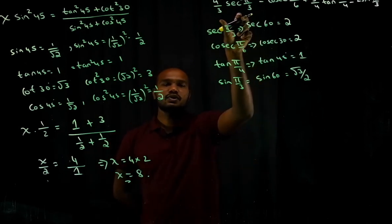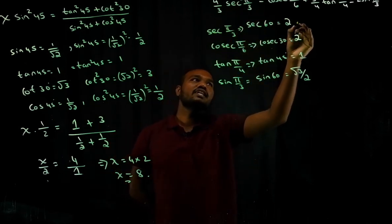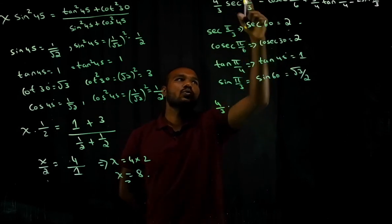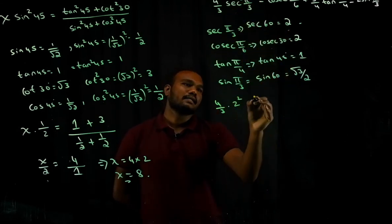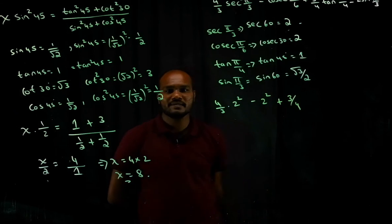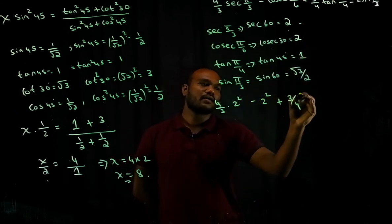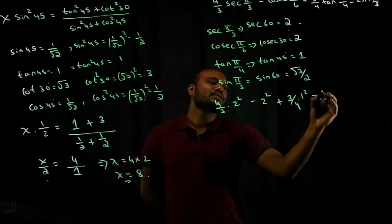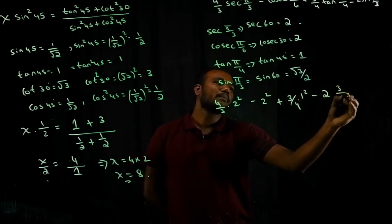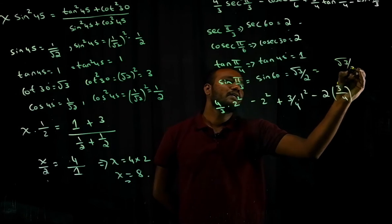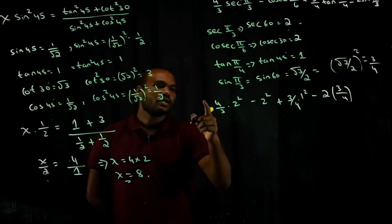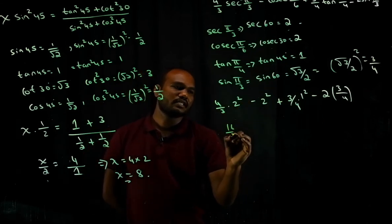Now substituting back: sec²(π/3) = 2² = 4. The expression becomes (4/3) × 4 minus 2² plus (3/4) × 1² minus 2 × (√3/2)². Since (√3/2)² = 3/4, we get 16/3 minus 4, and (3/4 × 1) minus 2×(3/4) = 3/4 minus 6/4.